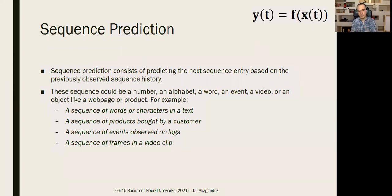Sequence prediction consists of predicting the next sequence. Sequence prediction, we start by this. So given an input, I want to just guess a sequence: a sequence of words or characters in a text, a sequence of products bought by a customer. So I'm trying to guess the next element. That's the basic definition. It could be a sequence of events observed on logs, a sequence of frames in a video clip. So it is like you are trying to make an anomaly detection system, some data comes.